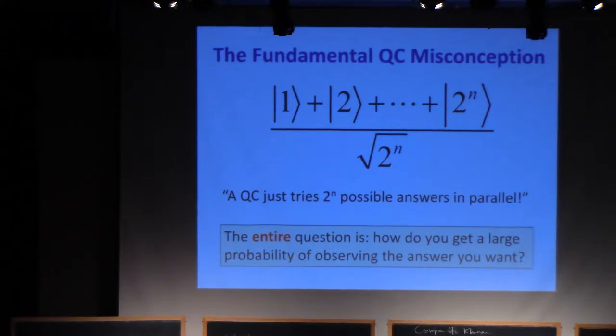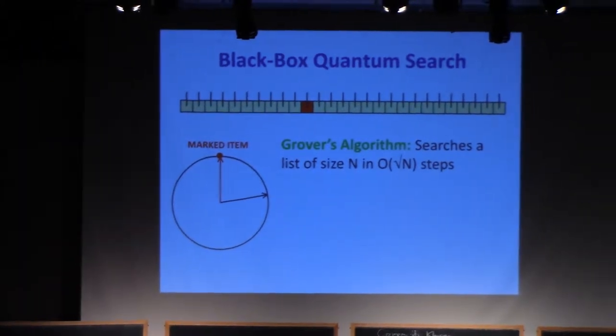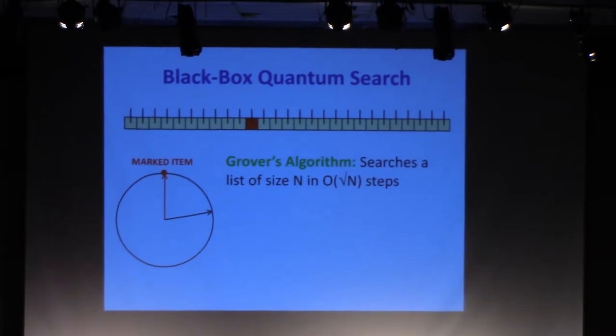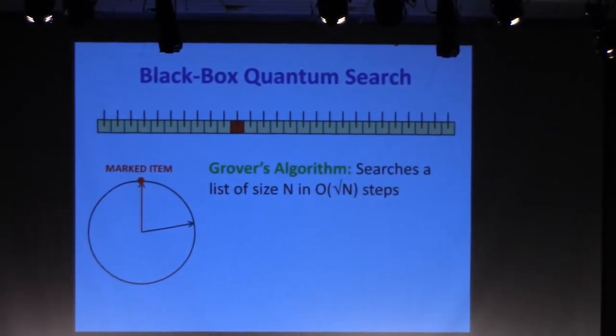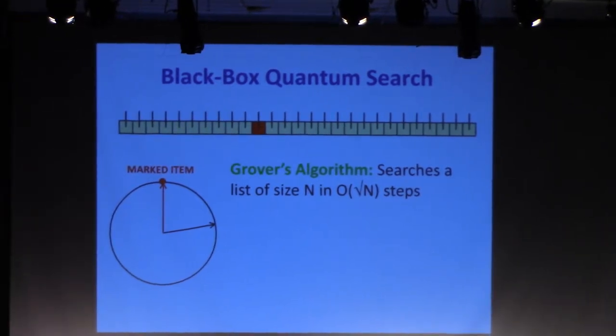Maybe not shockingly. After all, we don't even know whether P equals NP. So we're not going to be able to prove in our current state of knowledge that quantum computers can't do it. But what we can do is say that if there is a fast quantum algorithm for the NP-complete problems, then it has to look very different from any of the quantum algorithms that we know. So here's one way you could think about it.